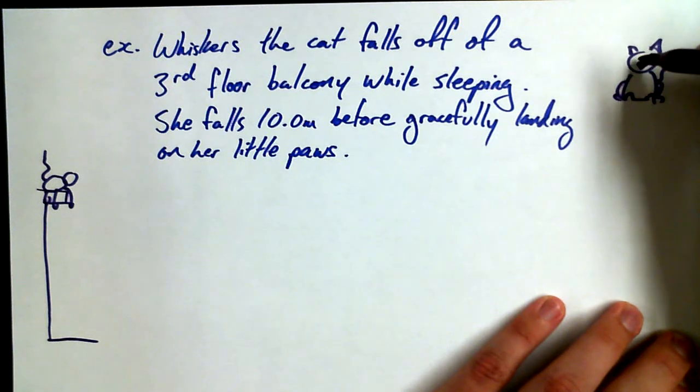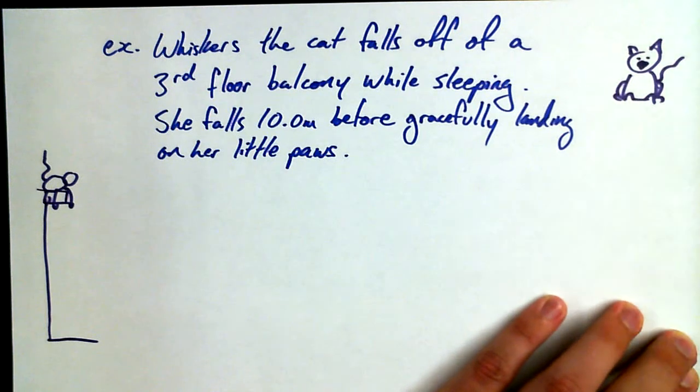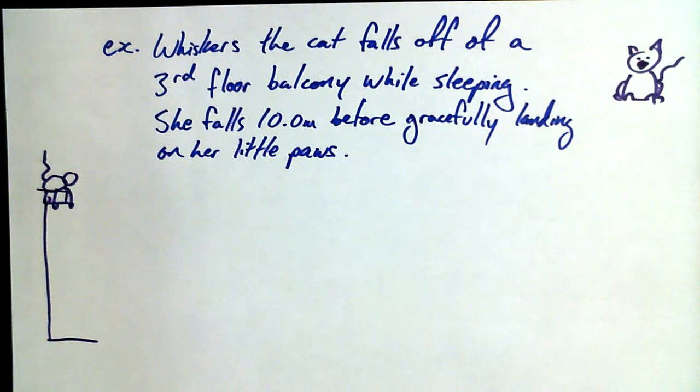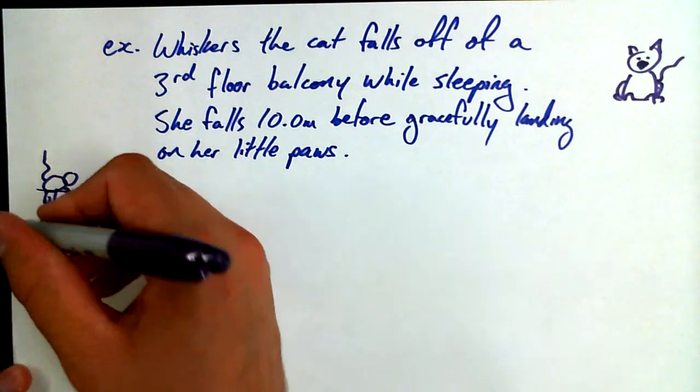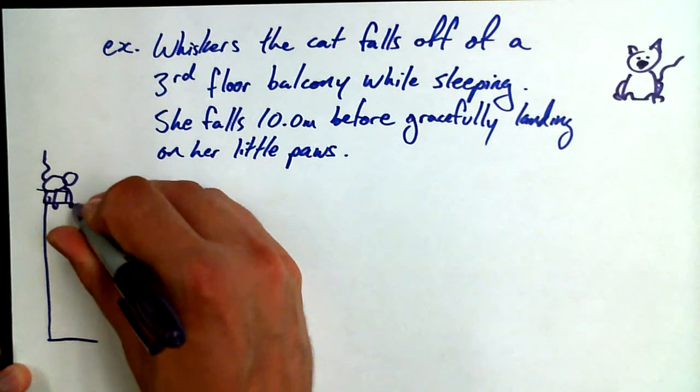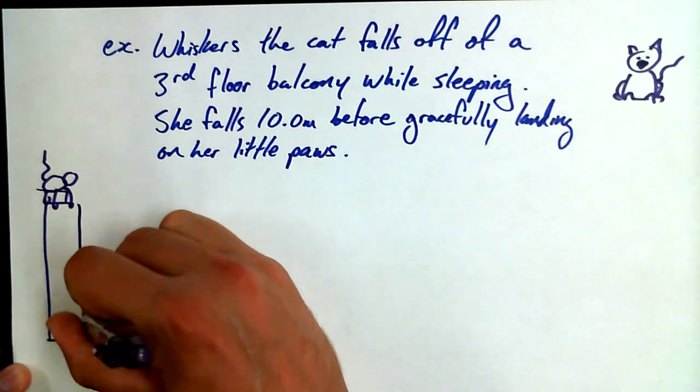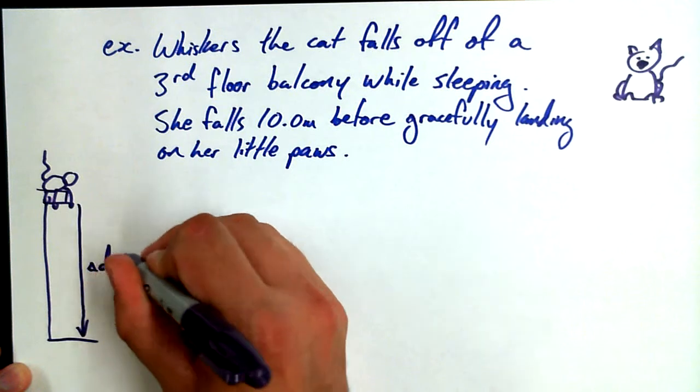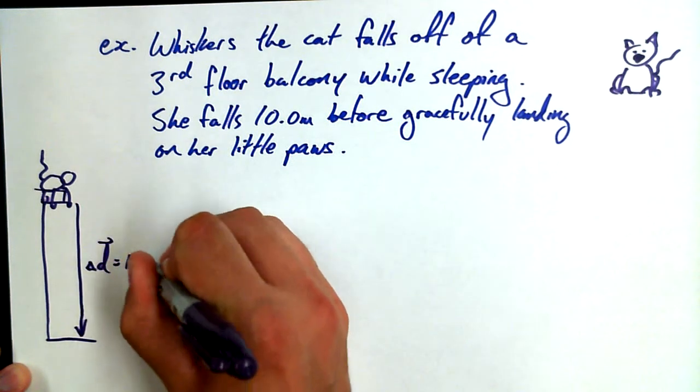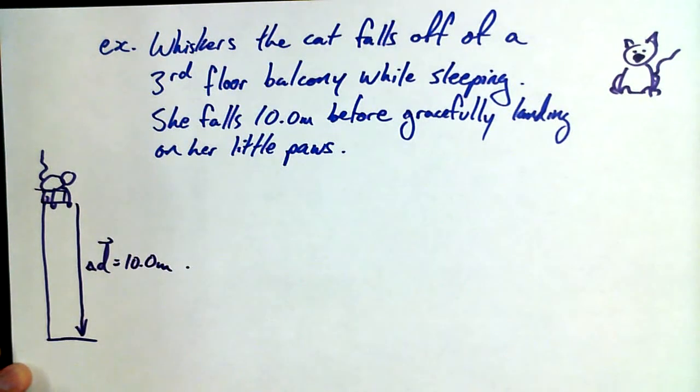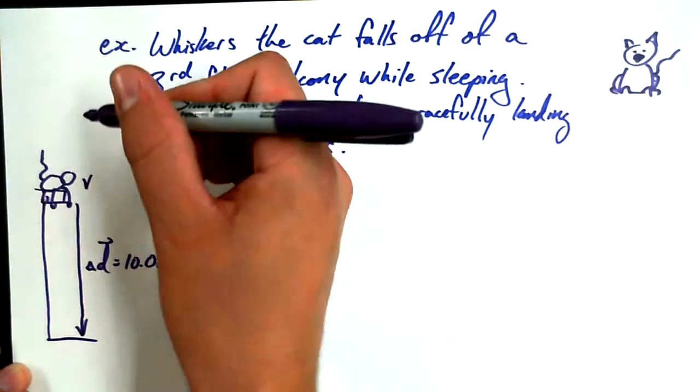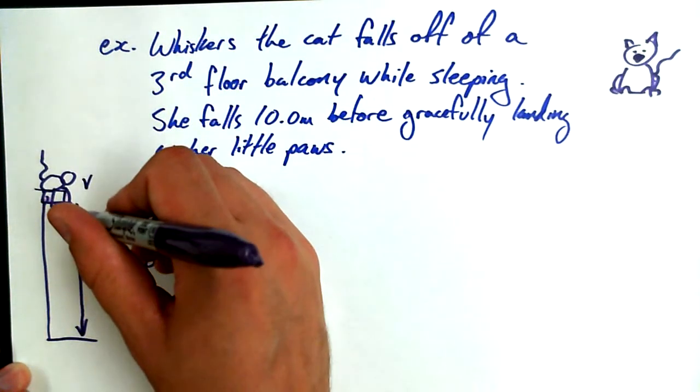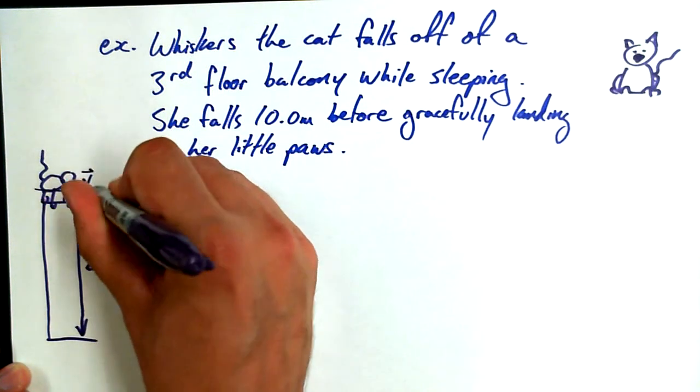Little cat Whiskers sitting on a balcony. We should write in our givens. She's going down and that's going to be our displacement, 10 meters. What's her initial velocity if she's sleeping?